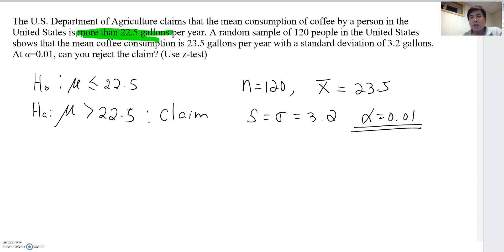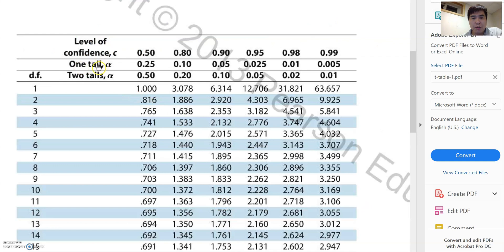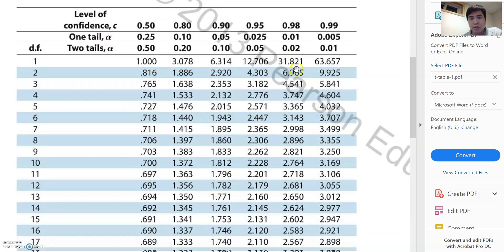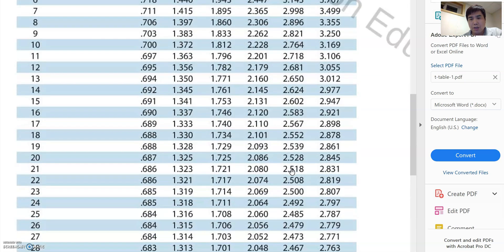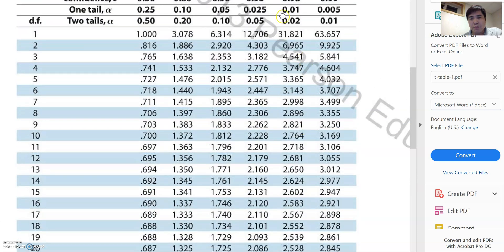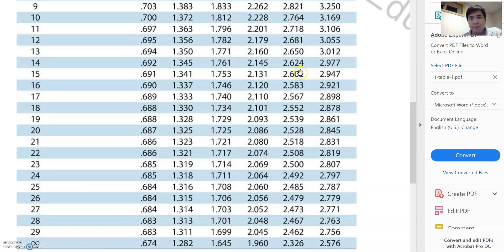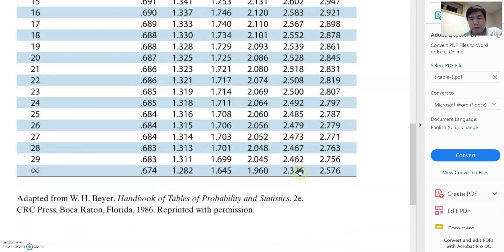So we are using Z-test, which means we need to find the corresponding Z-score of the alpha. So it is a one-tail test, right? So go to the Z-table. So one-tail alpha 0.01, and go to the bottom here. Then that's 2.326. Let me double check. So 0.01, and then alpha becomes 2.326.